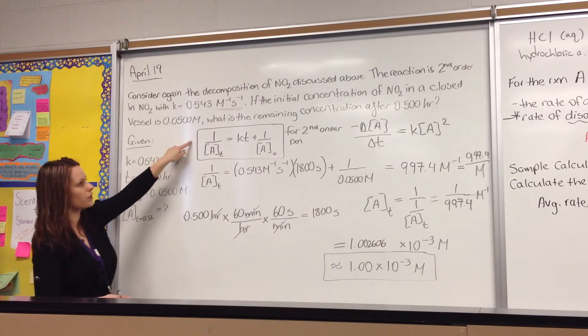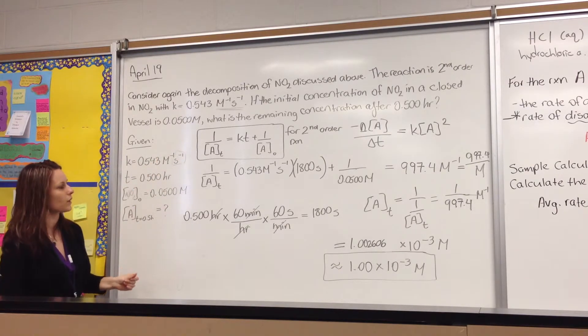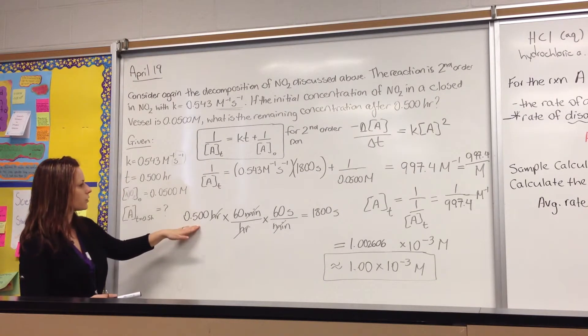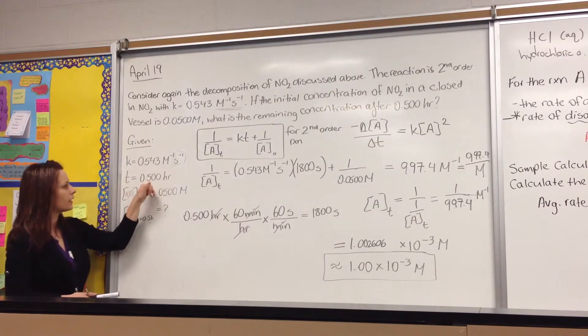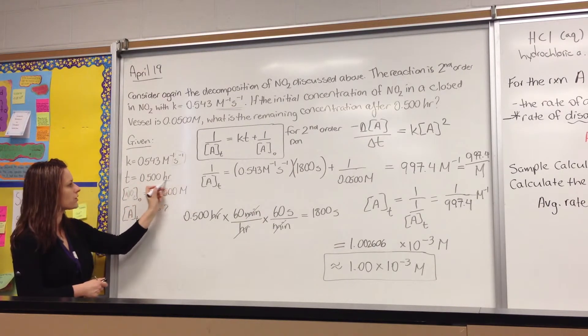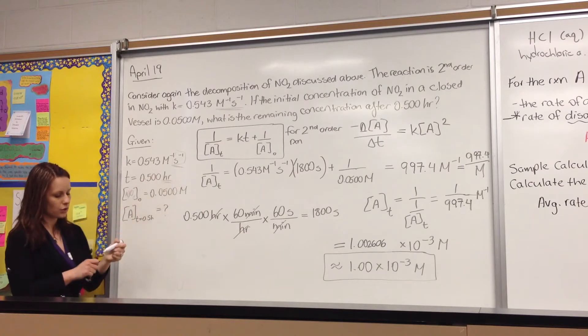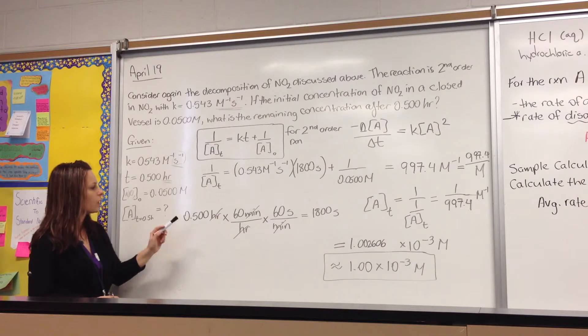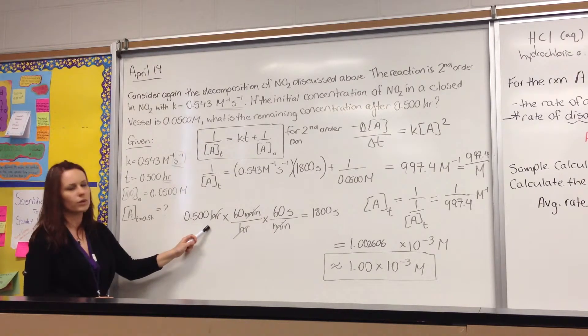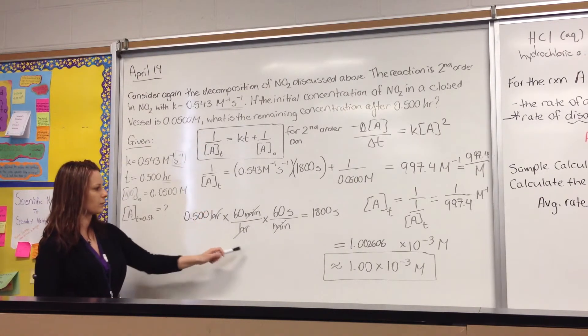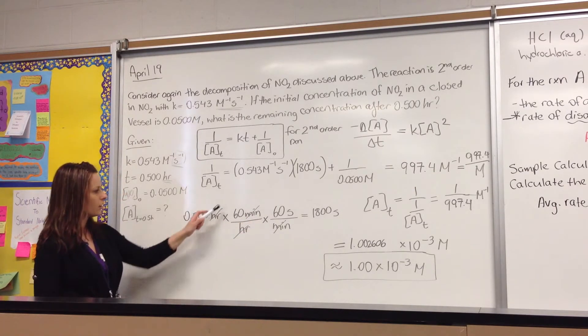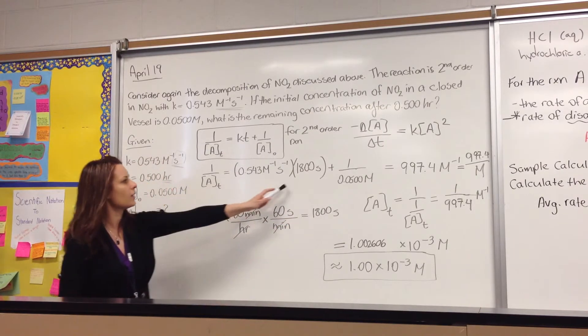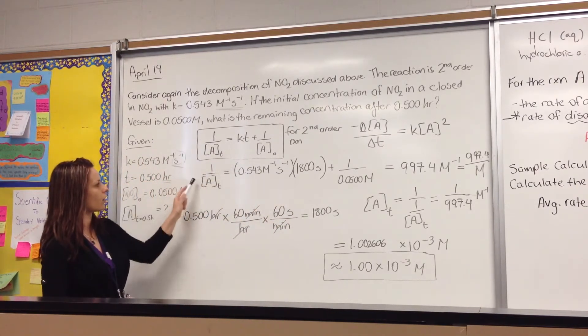So we're going to use the second-order integrated rate expression in order to figure this out. And the first thing that we have to do is we notice that we are given time in units of hours, but our rate constant was in units per second. So the first thing we have to do to tackle this problem is convert half an hour to seconds. So we multiply by 60 minutes per hour times 60 seconds per minute. We cross out the units until we get seconds, 1,800 seconds. And we plug that in into our rate expression.